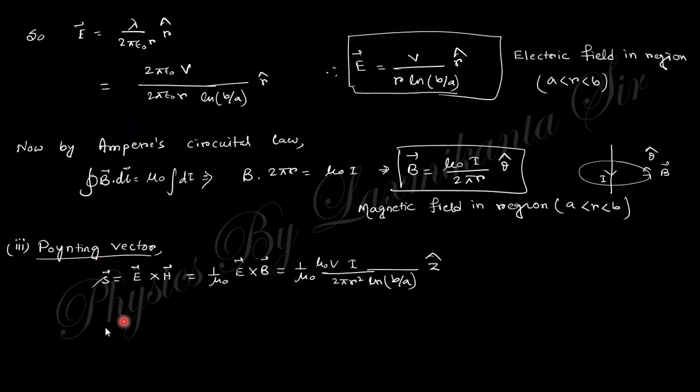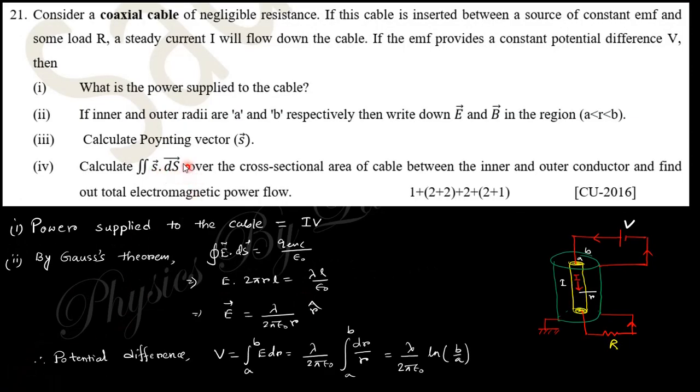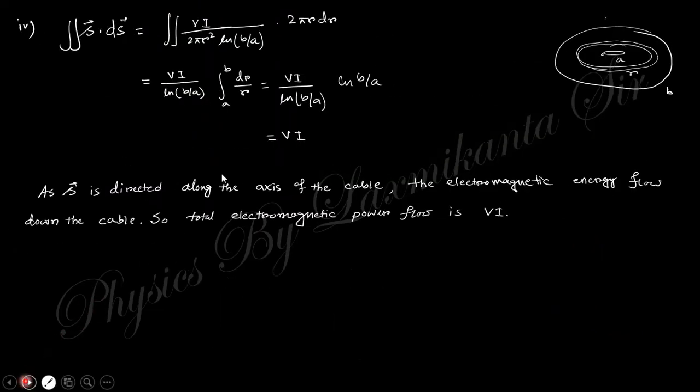Question 3 says find the Poynting vector, S. Now calculate this integration and then find out the total electromagnetic power. If you integrate this, you will find VI, which satisfies the previous result.